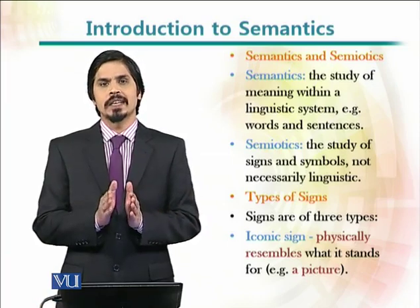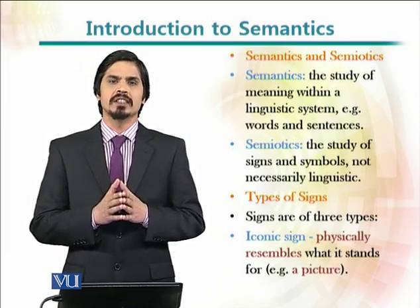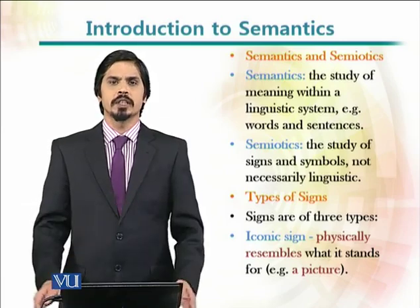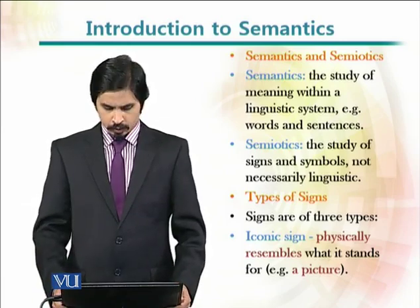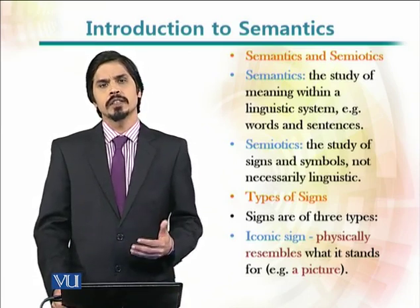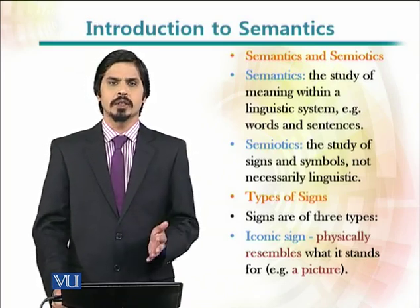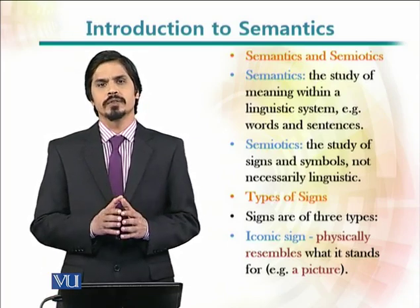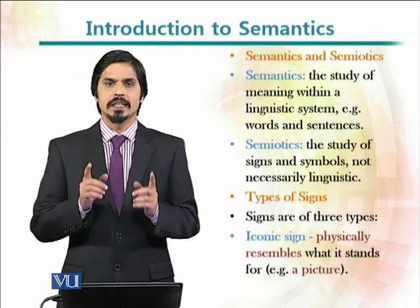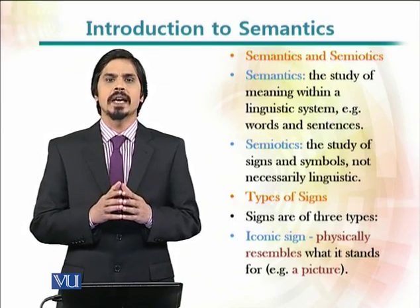To elaborate the relationship between semantics and semiotics, we need to look at the kinds of signs used in semiotics. One important type is iconic signs — signs which relate to a real object. For example, a picture is an icon of something it represents, so there is a resemblance between the sign and the real object.